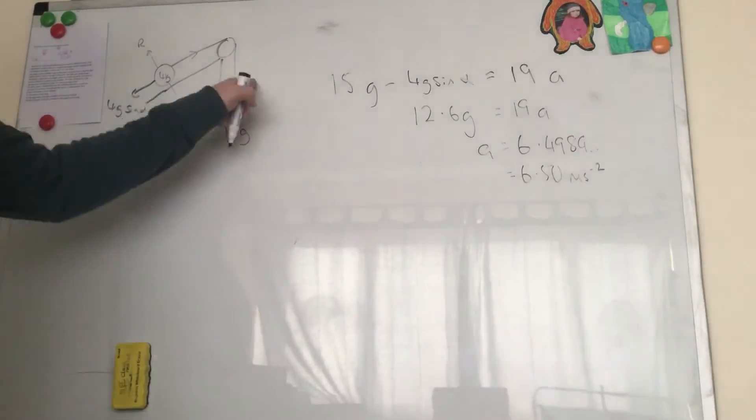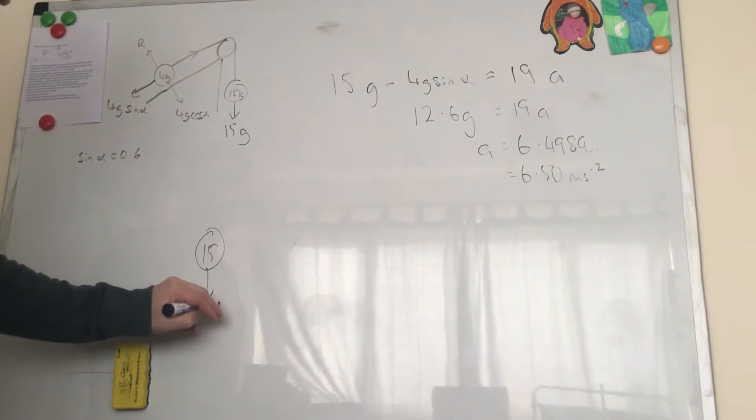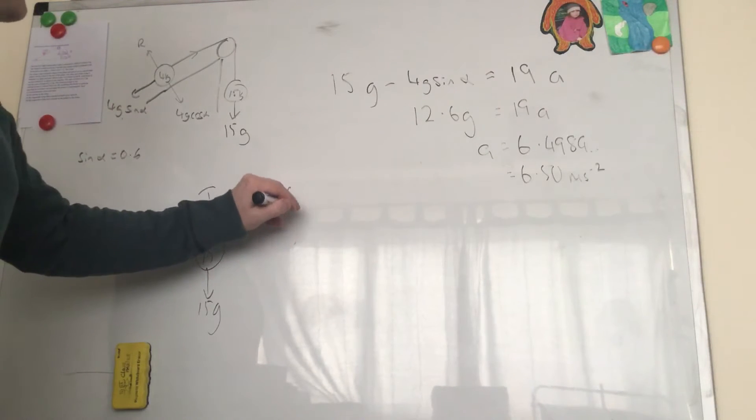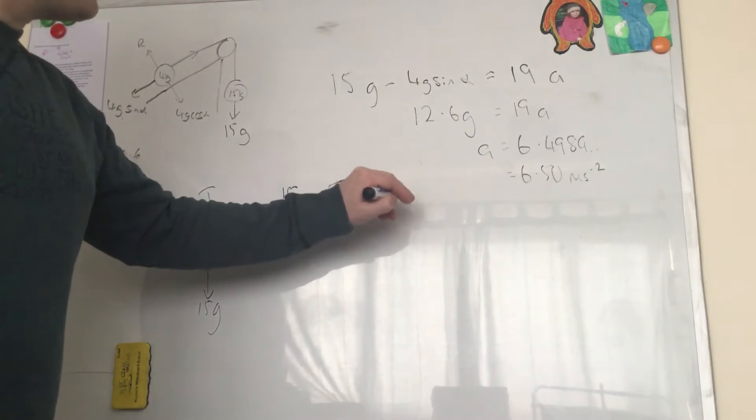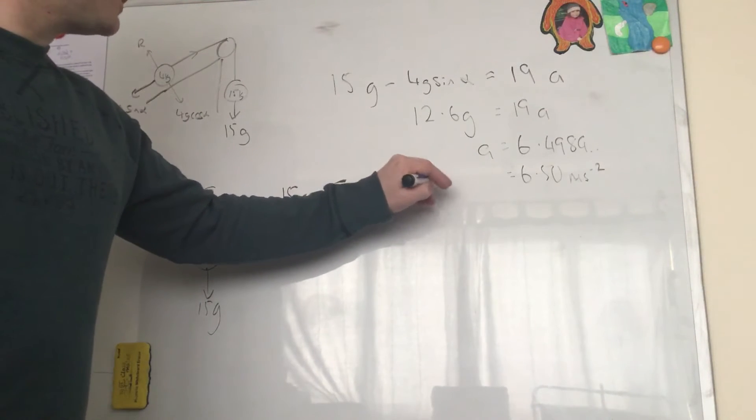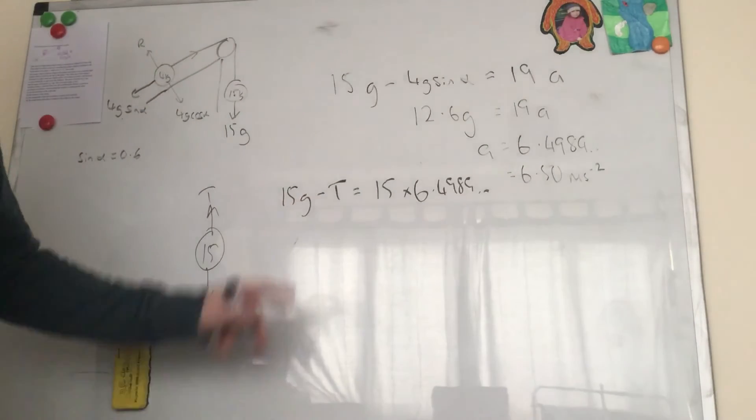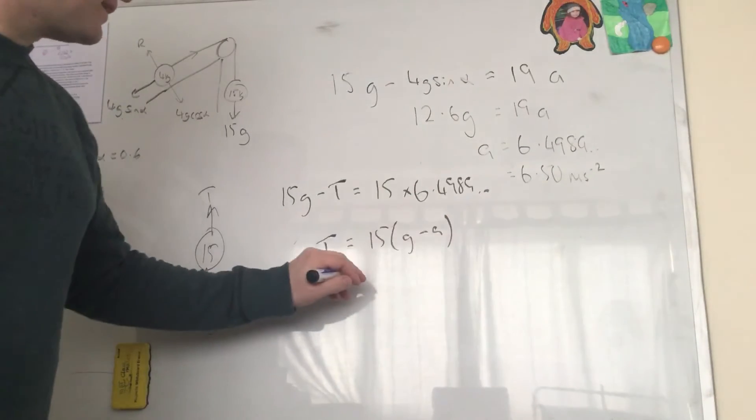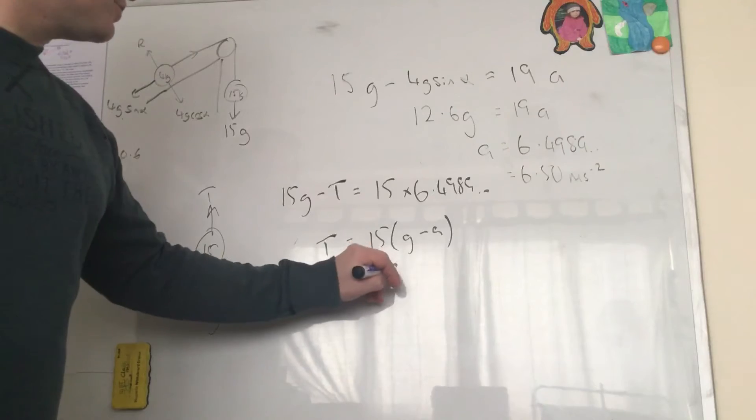So B is find the tension. So I'm just going to look at this particle here, 15. It's got 15g going down, it's got T going up. So we get 15g minus T equals the mass 15 times the acceleration which was 6.4989. So we get T equals 15g minus a basically, and when we sub that in we get 49.5 newtons.